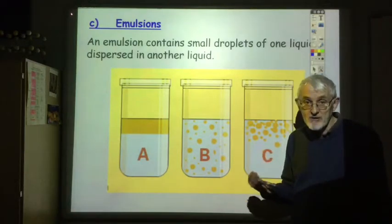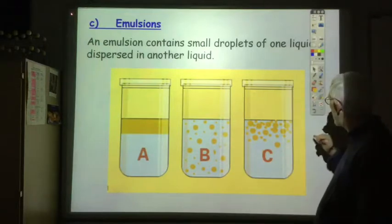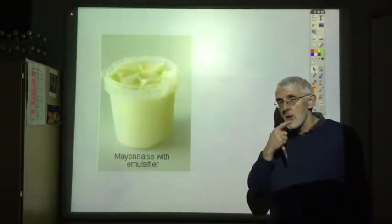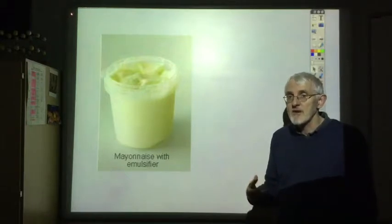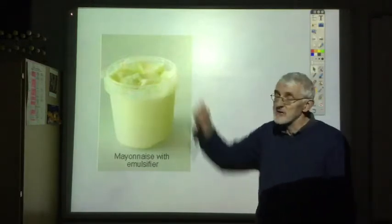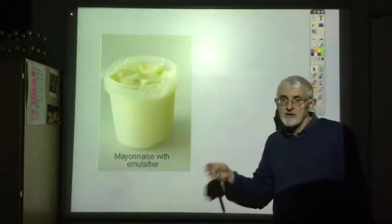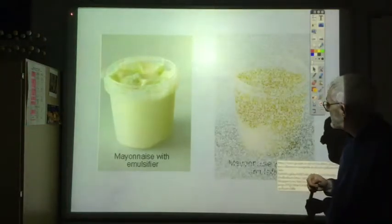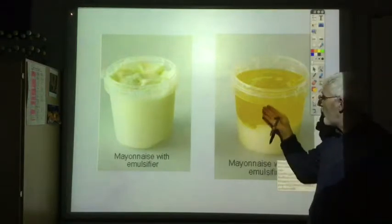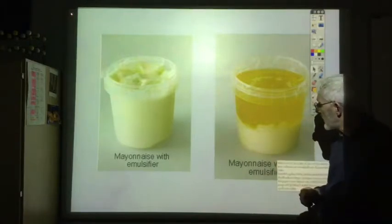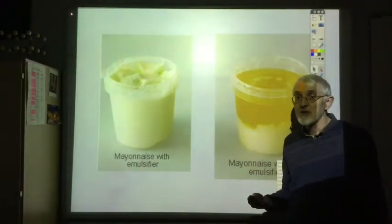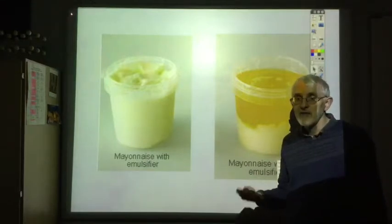Soaps and detergents are emulsifiers — that's how they work to remove oil and grease from clothes or whatever. But we are really interested in what we use as an emulsifier in the food and drink industry. Lots of foodstuffs are emulsions — for example, mayonnaise. A jar of mayonnaise has an emulsifier added and just looks like normal mayonnaise. But if you put all the ingredients of mayonnaise together without the emulsifier, the oil would separate and you'd get a very large oily layer at the top, which doesn't look very pleasant. So we have to use an emulsifier, but because it's in the food and drink industry, we don't want to use soap or detergent because that would greatly ruin the flavour of the food.